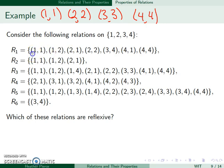So for instance, this first set has 1,1, and 2,2, but no 3,3. So this one is not reflexive. This one has 1,1, but not 2,2. This one has 1,1, 2,2, 3,3, and 4,4. So it will be reflexive.